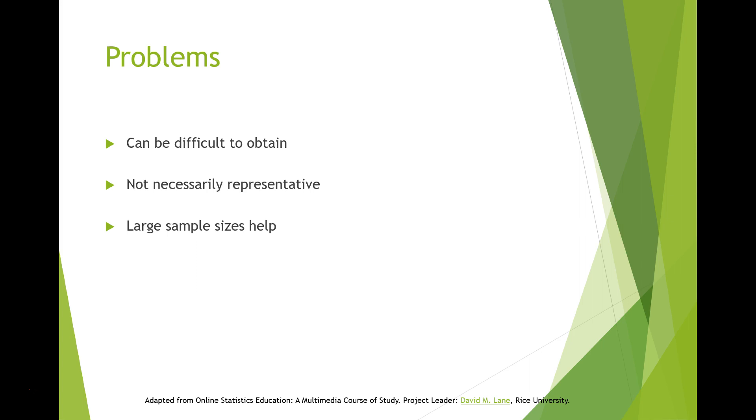Random samples, especially if the sample size is small, are not necessarily even roughly representative of the population. For example, if a random sample of 12 were taken from a population with an equal number of males and females, there would be approximately a 1 in 5 chance that two-thirds or more of the sample would be female.